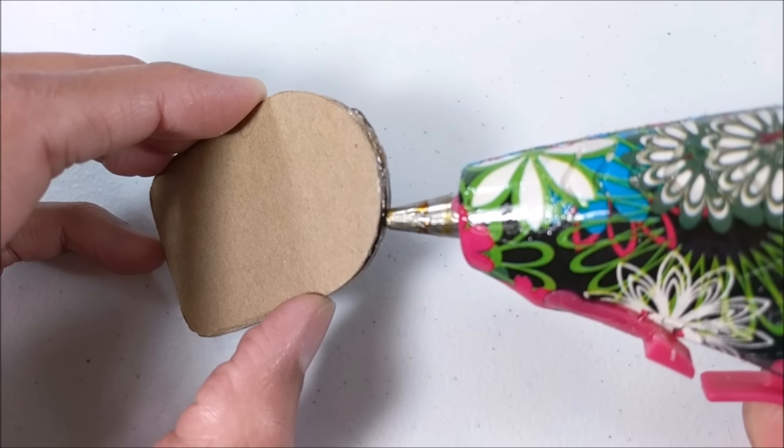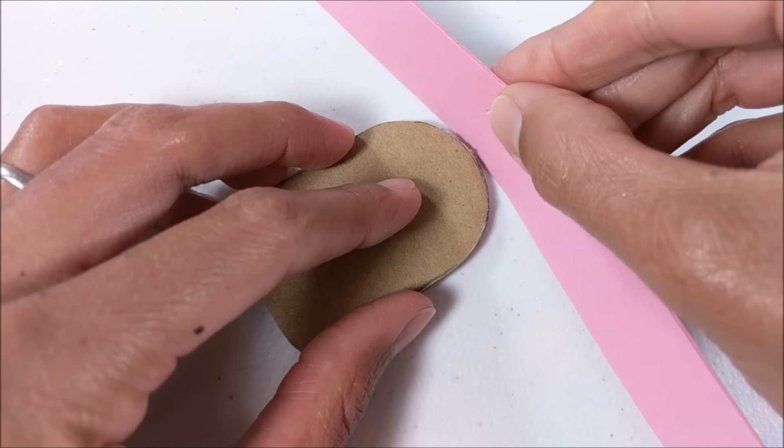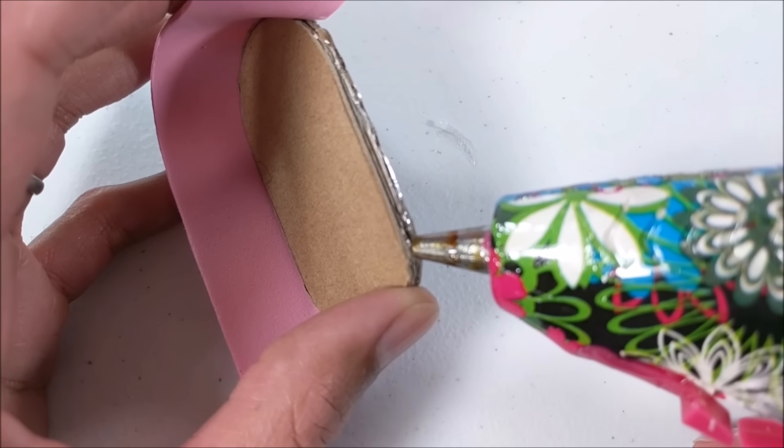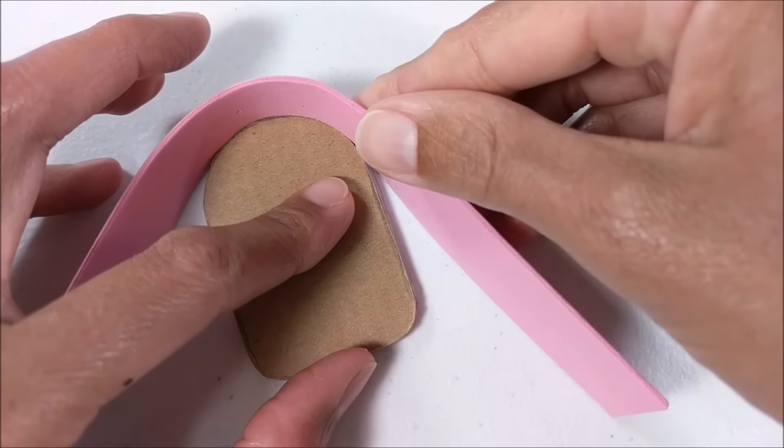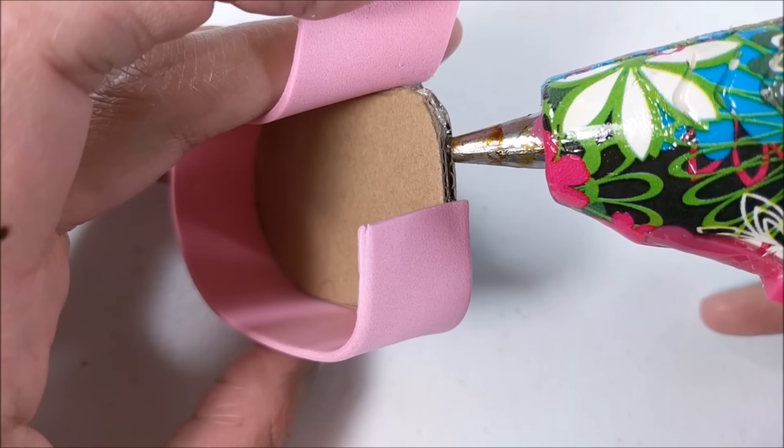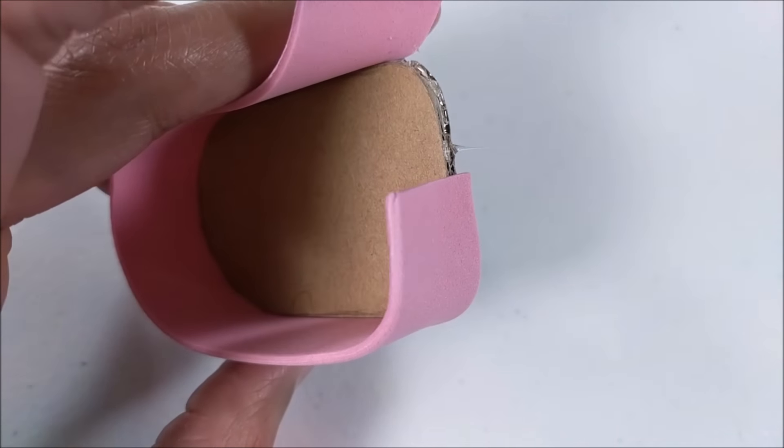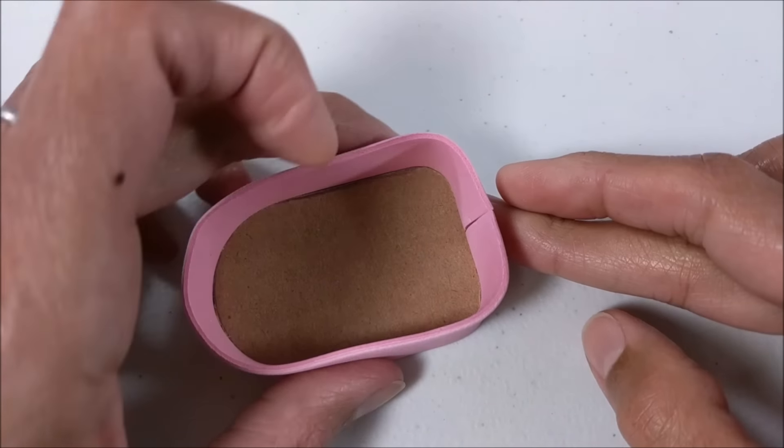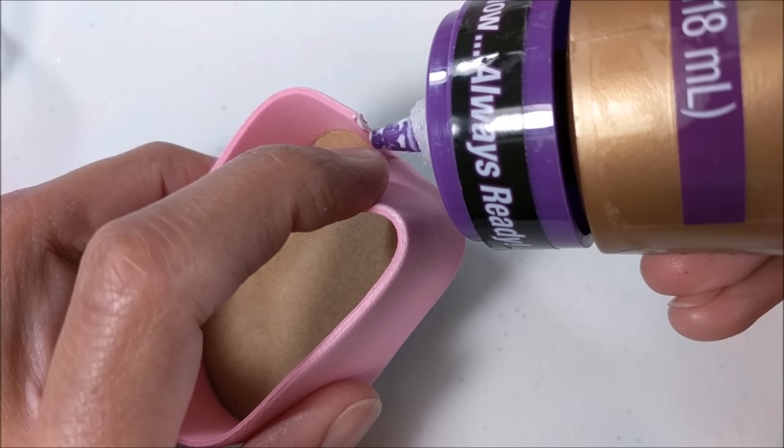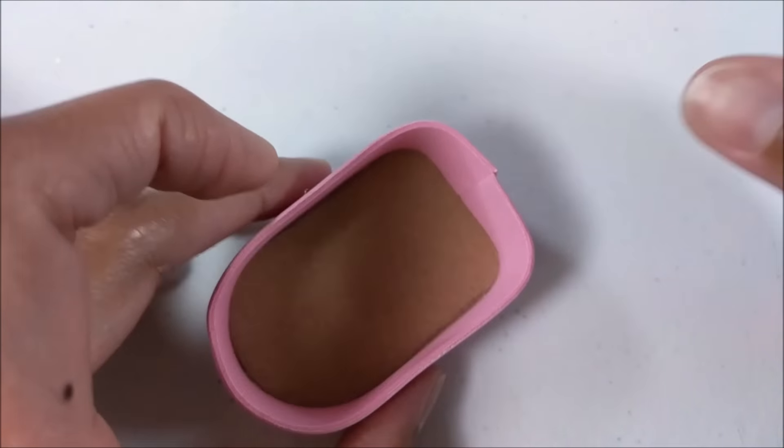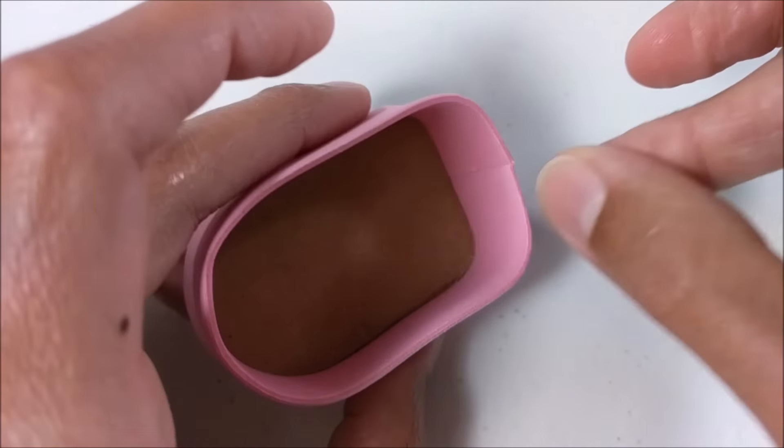Next I'm taking a strip of kraft foam. Mine is just under an inch tall and gluing all the way around. Once I line it up, I can use tacky glue or regular glue to glue the side pieces.